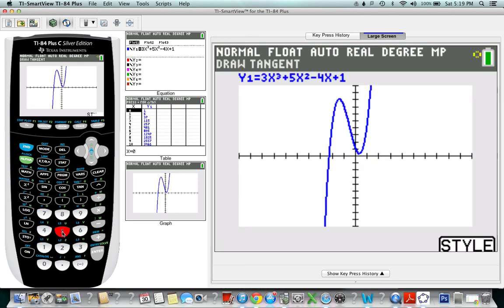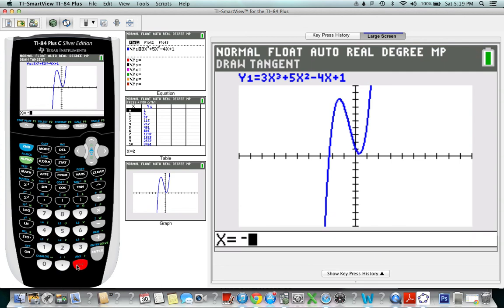So we go to 5 and we want it when x is negative 2. We type negative 2 and then we enter that.